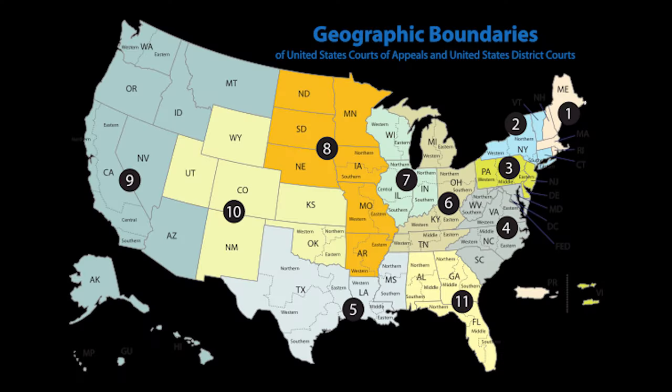We have a parallel system in the federal court. We've divided the United States up into federal court circuits. Why do we have these circuits? Well, one reason is expediency — the judges rotate, the appellate divisions rotate, and so it makes it easier to have it in smaller regional areas. But there's also another good reason for this.